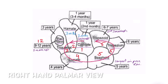Triquetral appears at three years of life, lunate at four years, scaphoid at five years, trapezium at five to six years, and trapezoid at five to seven years. There are variations in ossification center data across different research and regions of the world, but this is the approximated standard data.